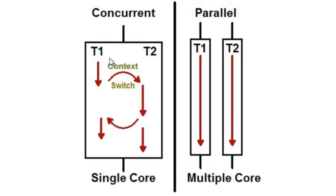The single core gives some time to T1, then context switches to T2, executes some part of T2, and again context switches back to T1. In Parallelism, tasks are executing on different hardware — separate cores or separate machines — so they just run parallel and execute as fast as possible. We can conclude that Concurrency is a feel of Parallelism, while Parallelism is real Parallelism.